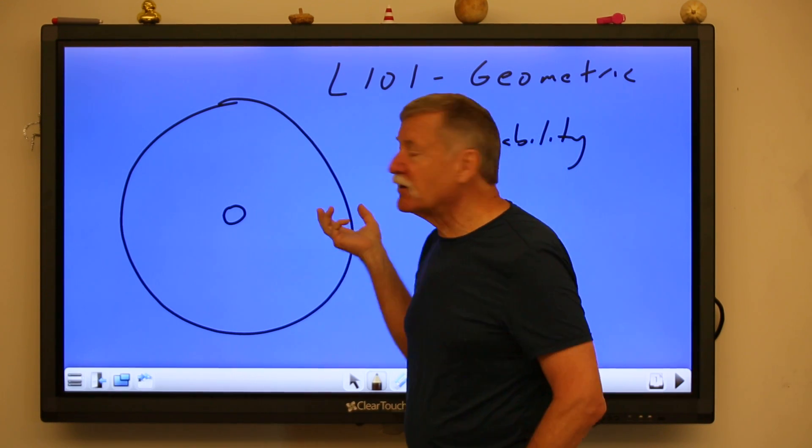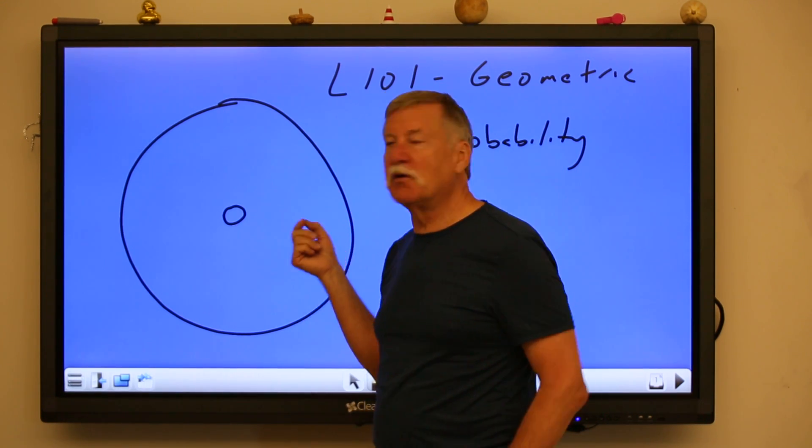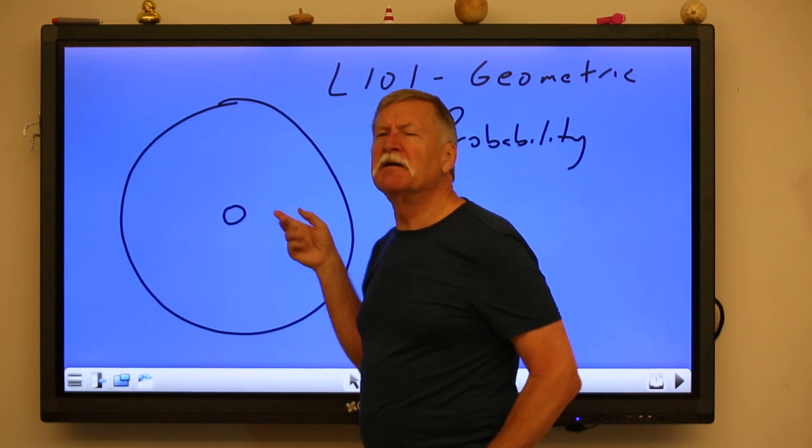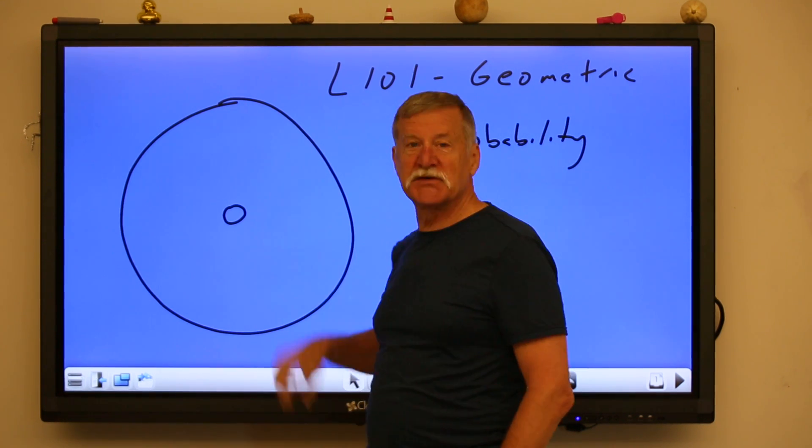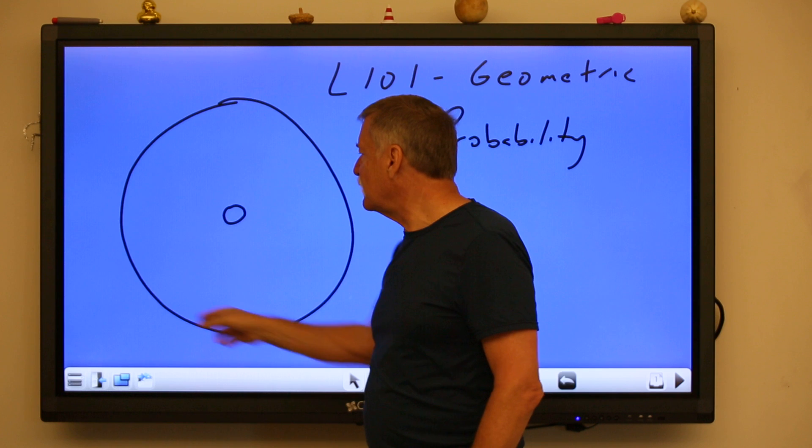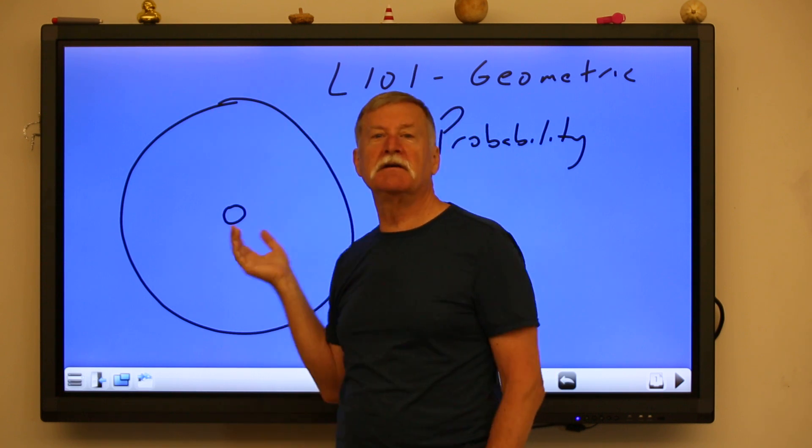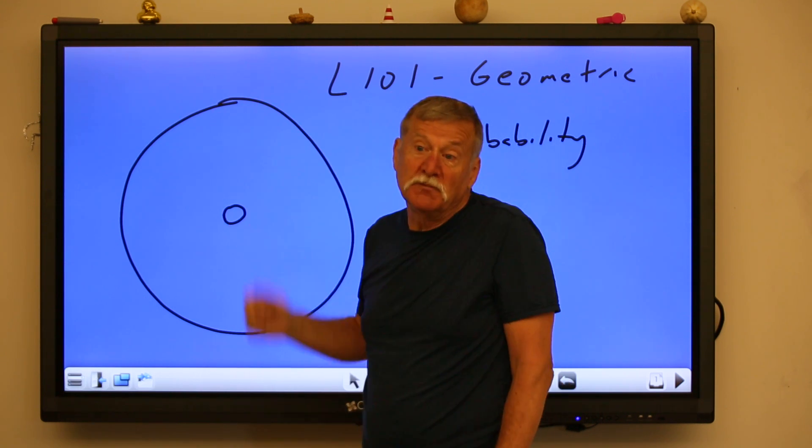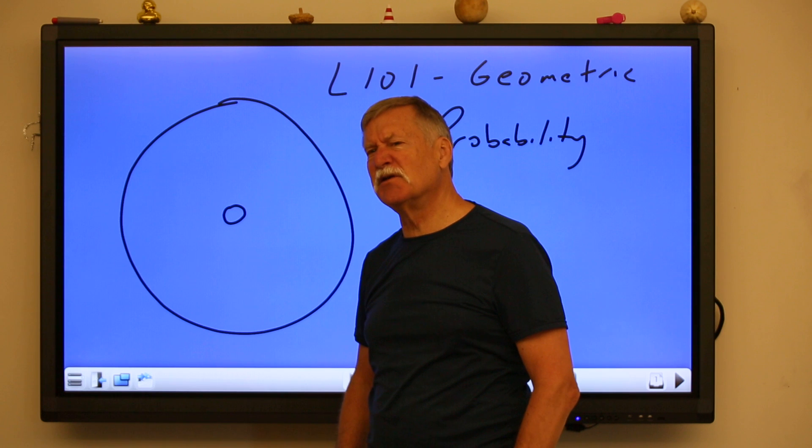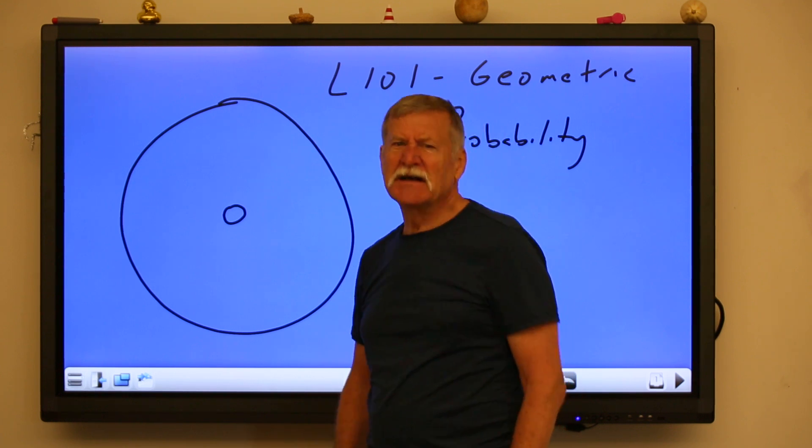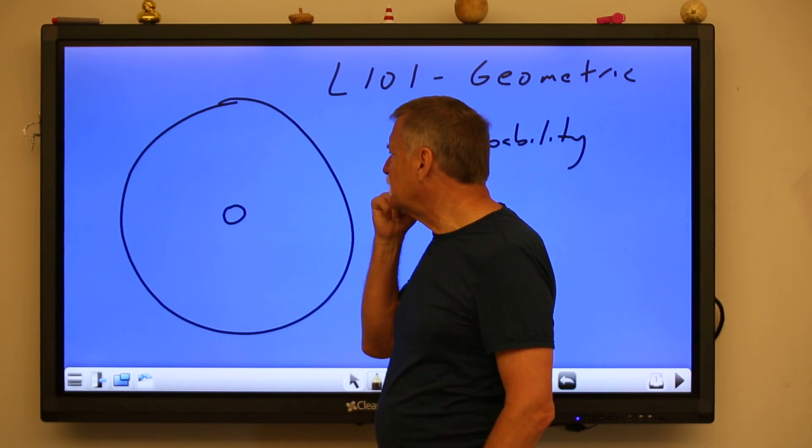Now if you were to close your eyes and throw a beanbag at this, what would be the chance of you hitting a small circle, assuming that your beanbag lands within the big circle? Well you could say your chances were not that good, kind of good, sort of good, maybe bad.